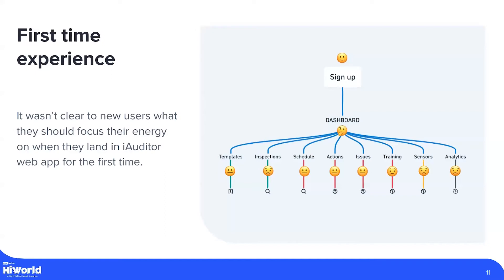So we did a few usability sessions. Majority of our users sign up on our website, and to get started we ask their email, name, surname, and create a password. Once done, they land on the dashboard. The dashboard is quite empty since you just created an account, but you can go to templates to create your first checklist and then start an inspection, create actions, and so on. Unfortunately, it wasn't 100% clear to our users what they should focus their energy on when they land in the app. But the good news is it gave us a really good understanding of where to start.